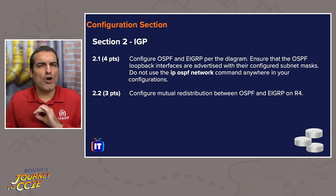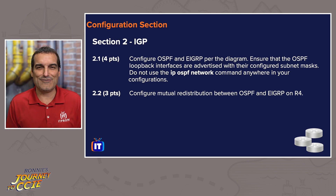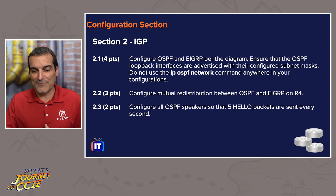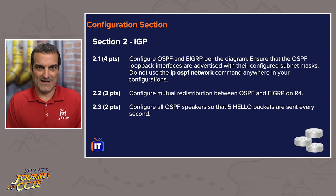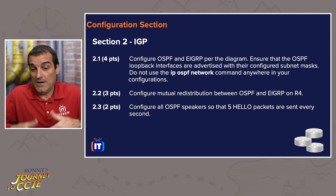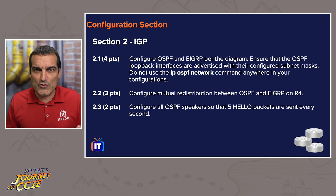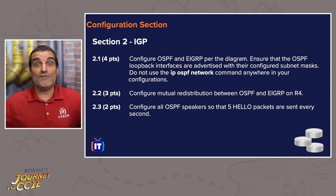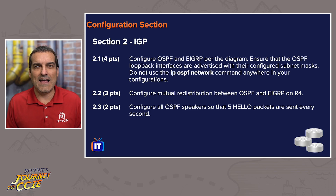Task 2.2 is a core task — we have to do the mutual redistribution or we're going to lose a whole bunch of other points. To wrap up with an IGP non-core example: configure OSPF speakers so that five hello packets are sent every second. Nothing else should depend on this — it's a fun little non-core two-pointer using OSPF fast hellos. If you know how to do it, bang it out. If not, put it on your skip task tracker and come back at the end of the day when you know how much time is left.